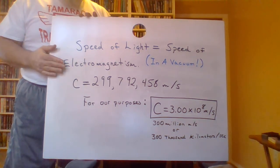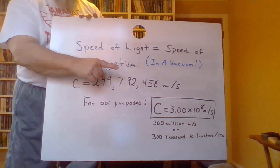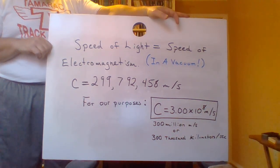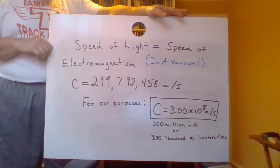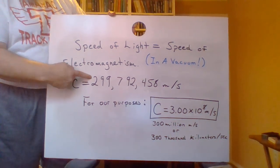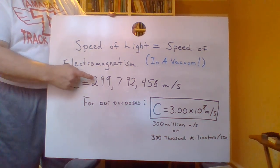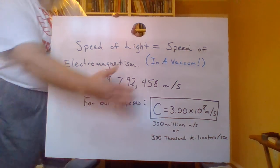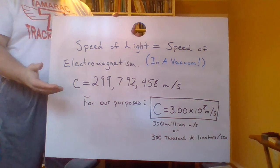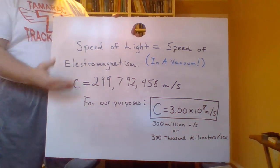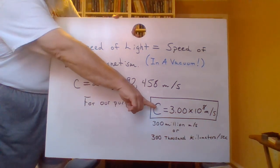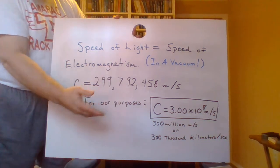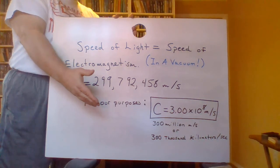All of these parts of the electromagnetic spectrum in a vacuum move at the same speed. With the greatest level of precision we've been able to achieve in modern times, we consider this to be an exact value for the speed of light: 299,792,458 meters per second. For our purposes, we rarely use nine significant digits, so to three significant digits we use 3×10⁸ meters per second — that's 300 million meters per second, or 300,000 kilometers per second.